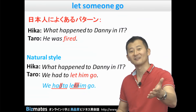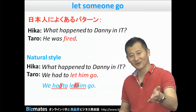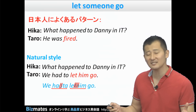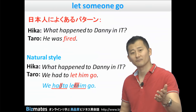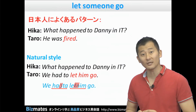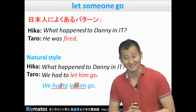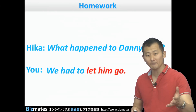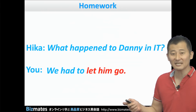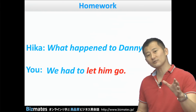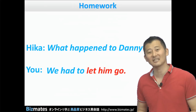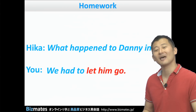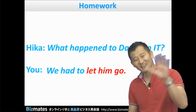You try. Good. Let's try with my question: 'What happened to Danny in IT?' Oh really? OK, just like that. Now for homework, I will ask you next time: 'What happened to Danny in IT?' And you say: 'We had to let him go. We had to let him go.' Please practice this, and we'll see you in the next lesson. Thank you.